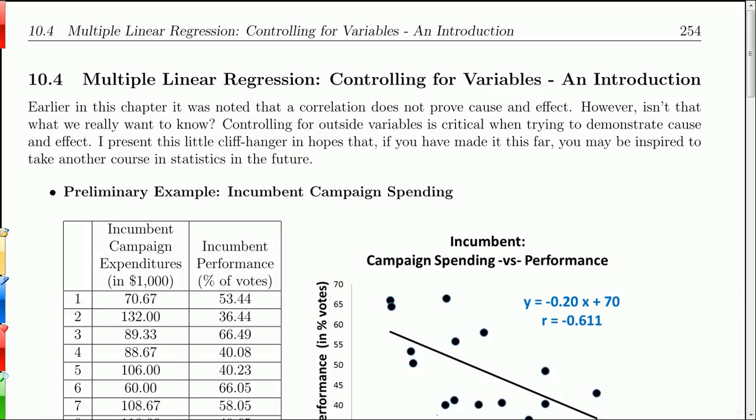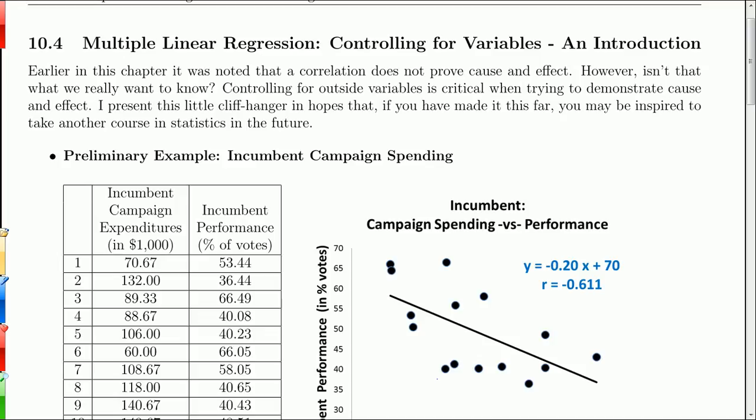Hello, and welcome to chapter 10.4 from Stevens' Introduction to Statistics, the Think and Do book. In this chapter, we're going to discuss multiple linear regression. It's just an introduction in hopes that this little cliffhanger may inspire you to take another course in statistics. And we're going to control for variables in our linear regression.